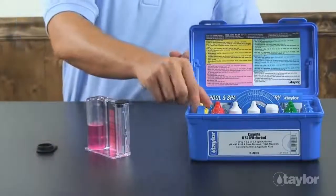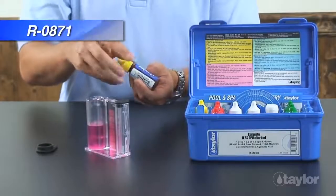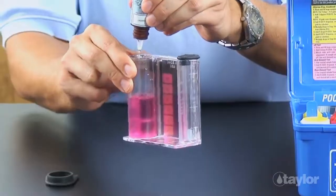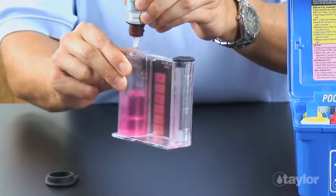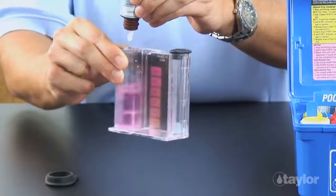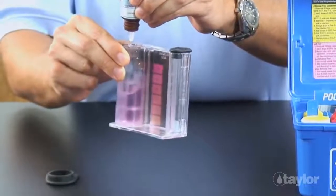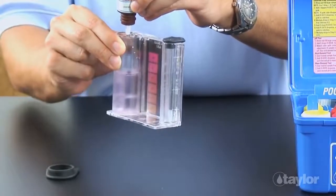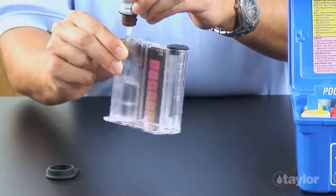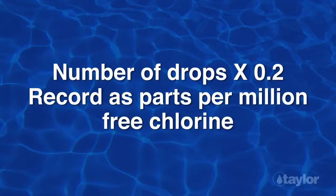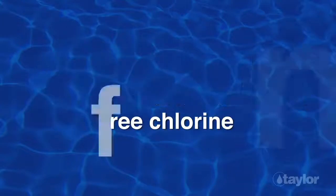Add reagent 871 for chlorine drop-wise, swirling and counting after each drop until the sample goes from pink to colorless. Multiply the drops needed to make the color change by 0.2. Record the result as parts per million free chlorine.